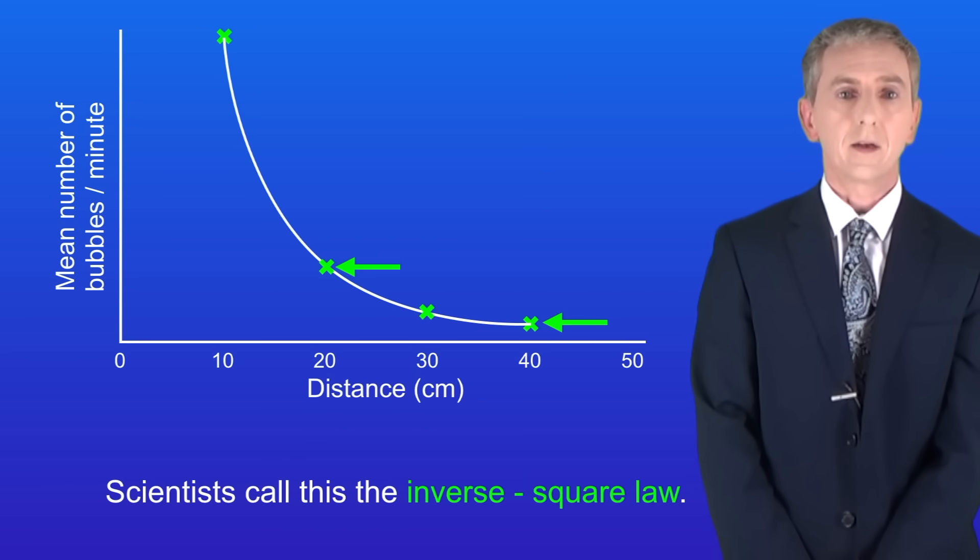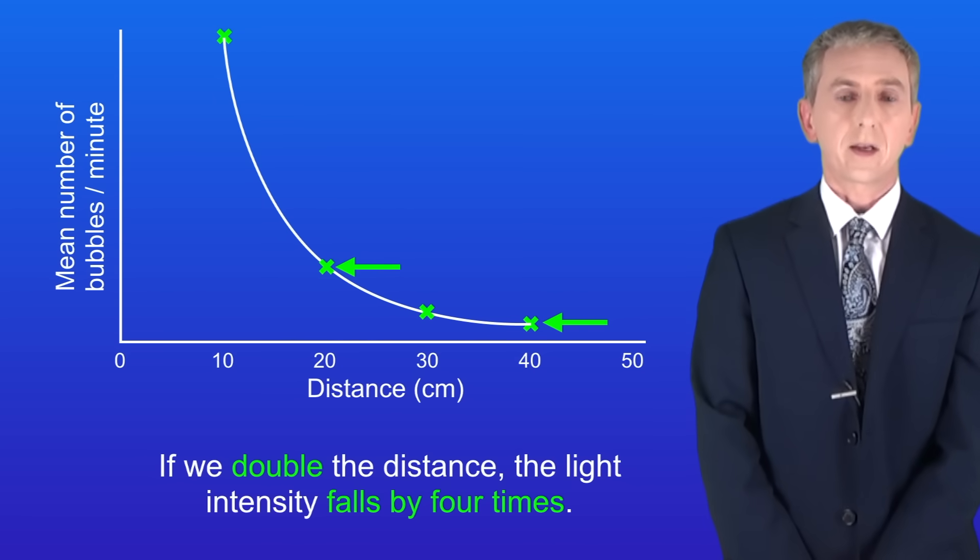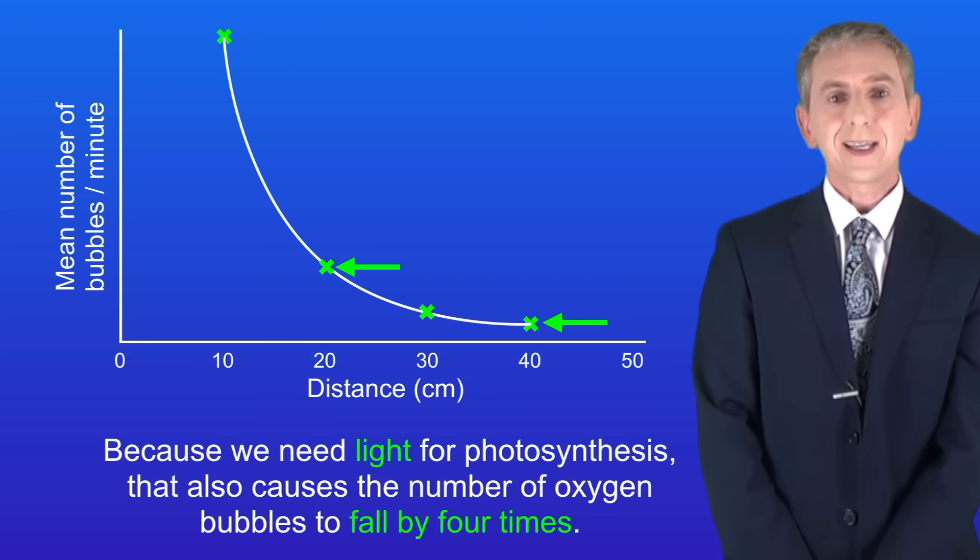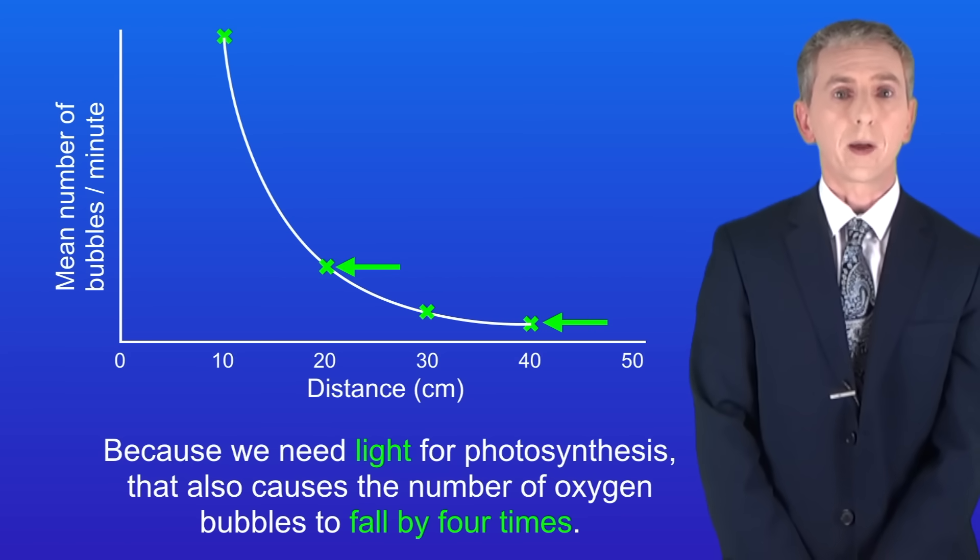Scientists call this the inverse square law. The reason for this is that if we double the distance the light intensity falls by four times. Because we need light for photosynthesis that causes the number of oxygen bubbles to fall by four times.